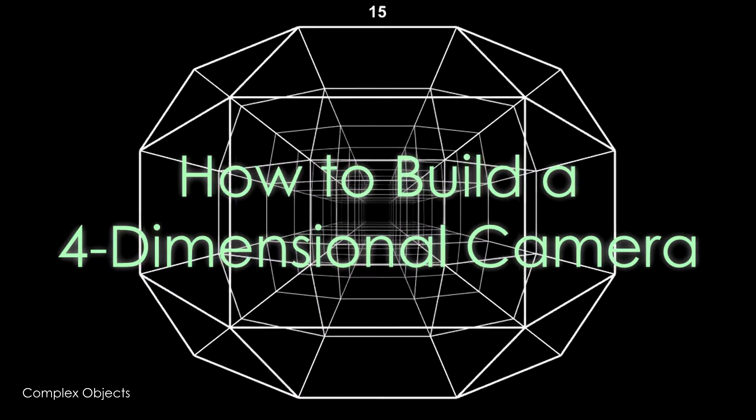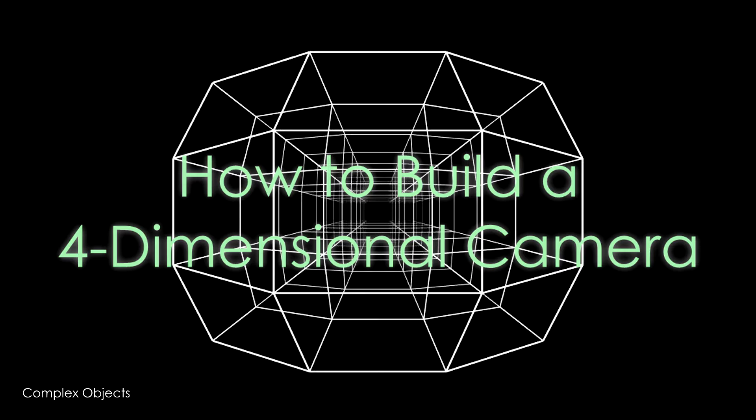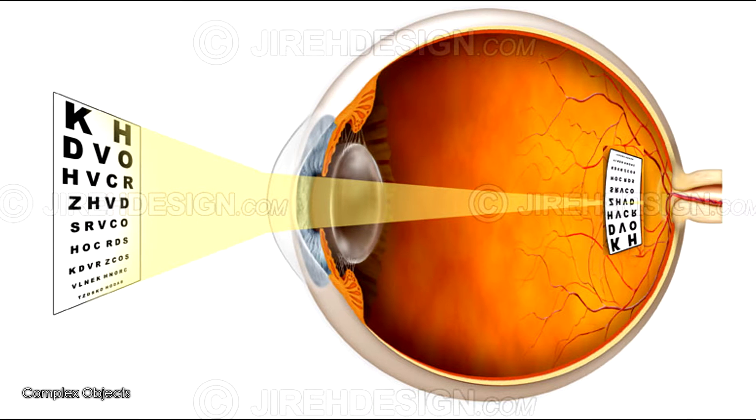So today I'm going to demonstrate how a camera lens or how your eye can look into a three-dimensional world and give you a two-dimensional image. And actually the image that is projected onto the back of the retina is flipped upside down and left to right.